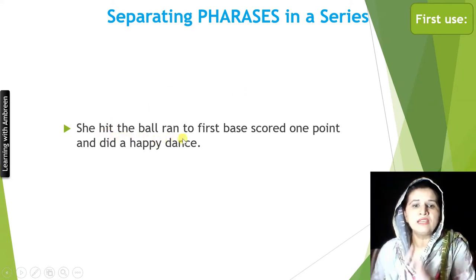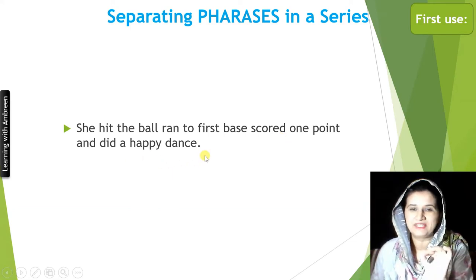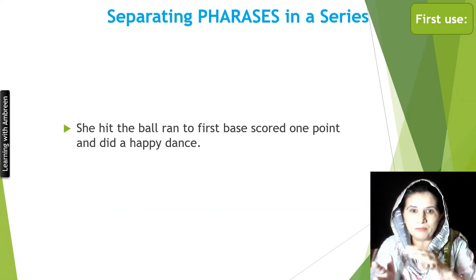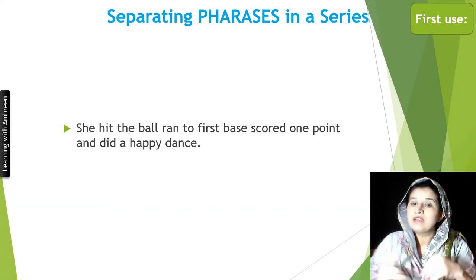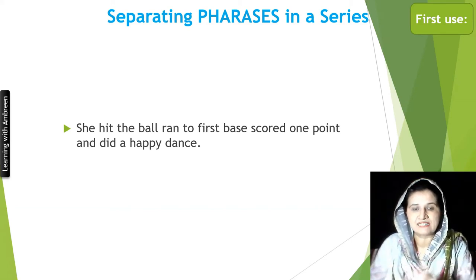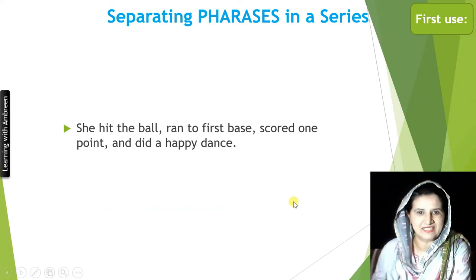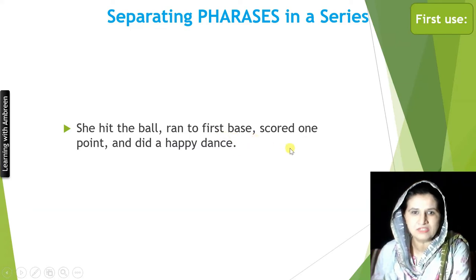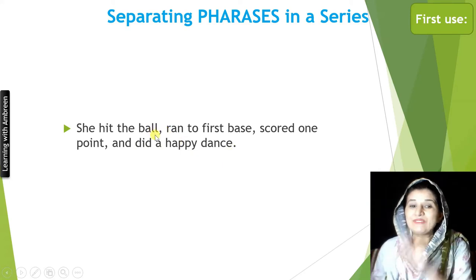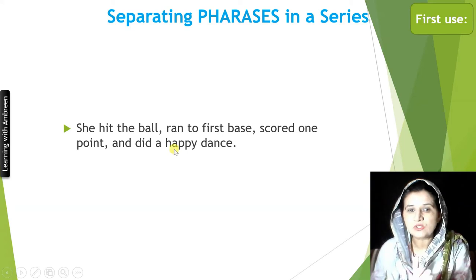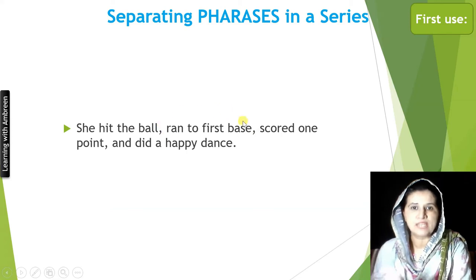Another example: 'She hit the ball, ran to first base, scored one point, and did a happy dance.' Without commas, the reader cannot tell which component is which and gets confused about where to pause. By adding commas at their proper places to separate the phrases, we make the job of our reader easy.